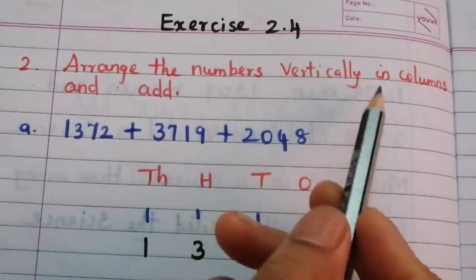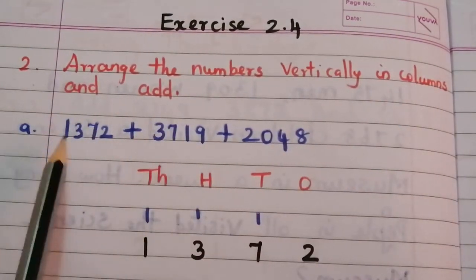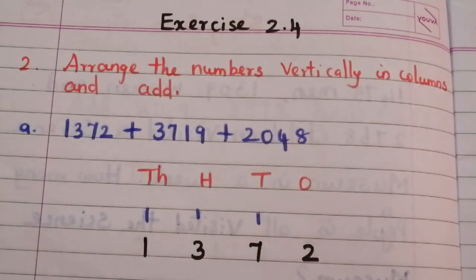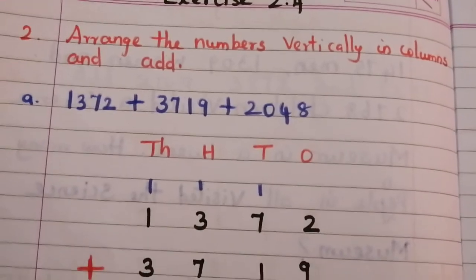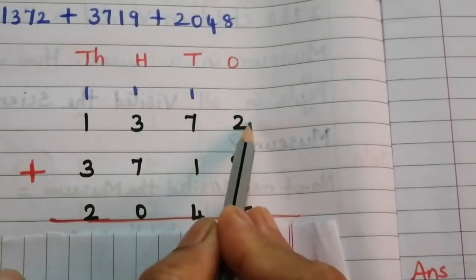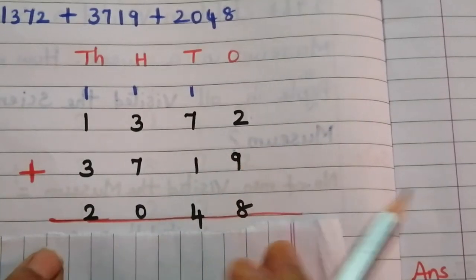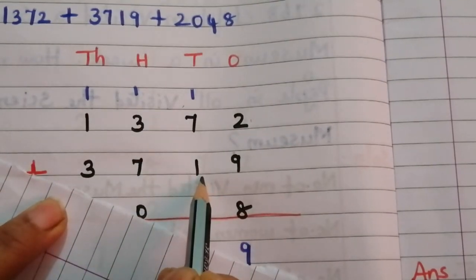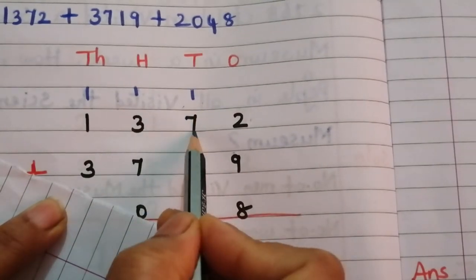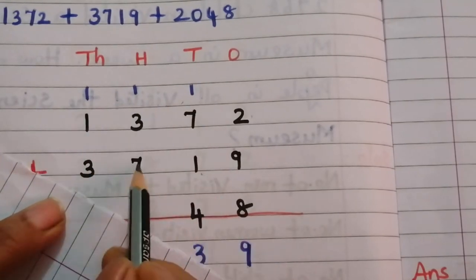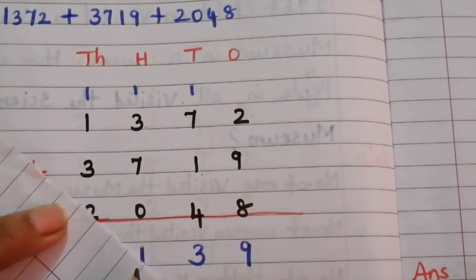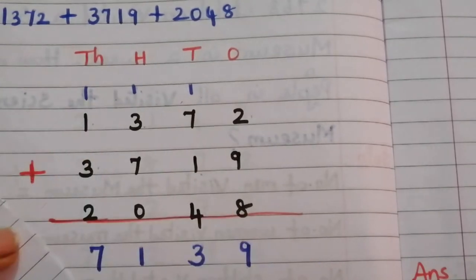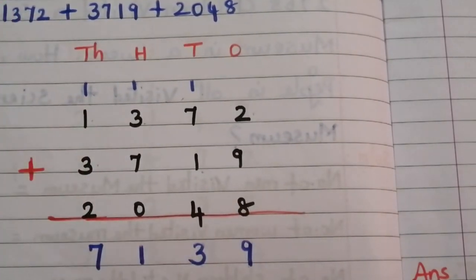Second section: arrange the numbers vertically in columns and add. Problem A: 1,372 plus 3,719 plus 2,048. Writing vertically and adding — ones: 8 plus 2 is 10, 10 plus 9 is 19; put 9 and carry 1. Tens: 4 plus 1 is 5, 5 plus 1 is 6, 6 plus 7 is 13; put 3 and carry 1. Hundreds: 7 plus 3 is 10, 10 plus 1 is 11; put 1 and carry 1. Thousands: 2 plus 3 is 5, 5 plus 1 is 6, 6 plus 1 is 7. The answer is 7,139.